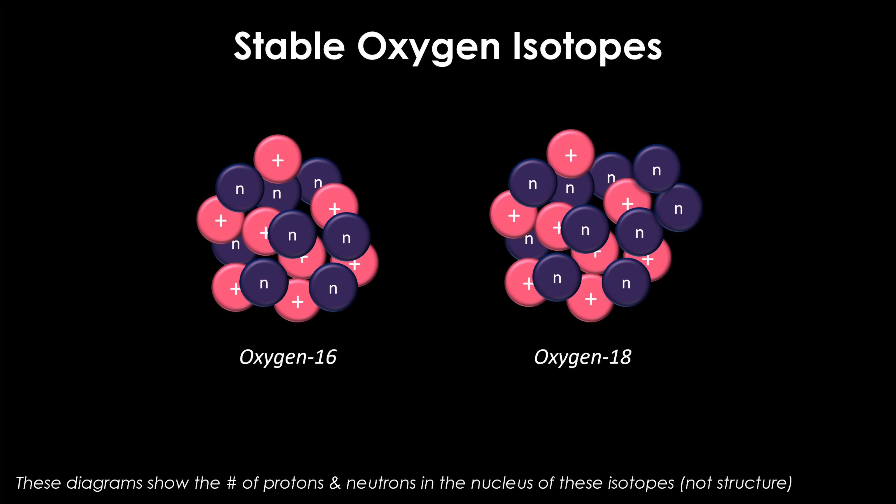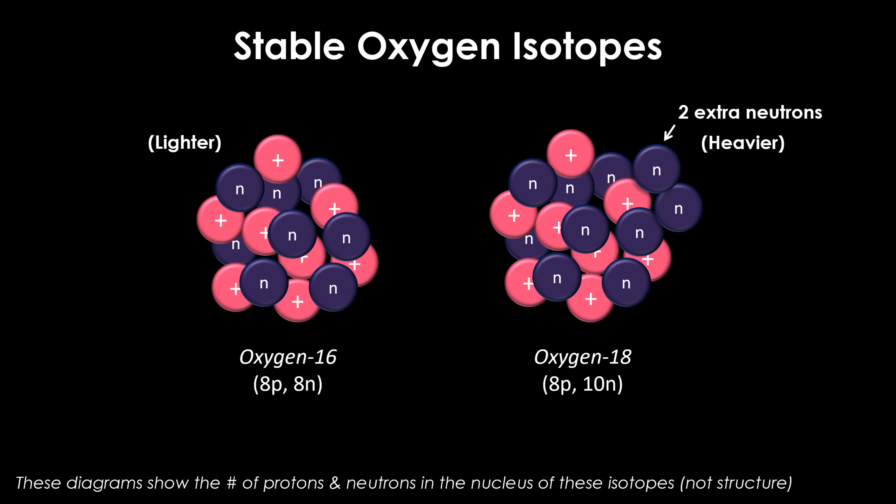Let's start with oxygen isotope ratios, which are a very popular proxy for ancient temperature. Oxygen has multiple stable isotopes, including oxygen-16 and oxygen-18. Isotopes are just atoms of the same element with a different number of neutrons — oxygen-16 has eight protons and eight neutrons, and oxygen-18 has eight protons and ten neutrons. We call these stable because they do not decay over time like the radioactive ones used for geologic dating. Because they remain stable, their ratios in rocks change depending on their mass, not time. Oxygen-18 is heavier than oxygen-16, having two extra neutrons, which makes a big difference for a relatively light element.